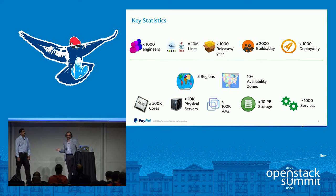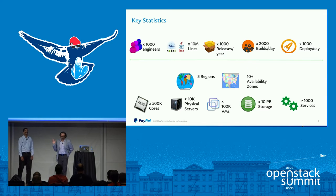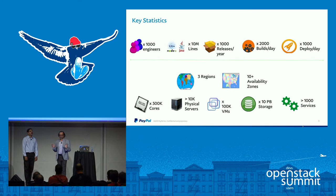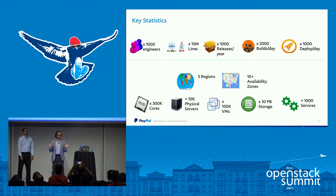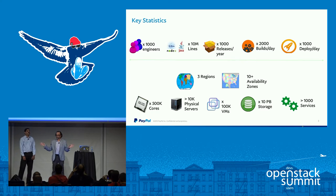Going to the infrastructure: we have thousands of engineers, over tens of millions of lines of Java, Node, and C/C++ code. We do over 1,000 releases every year, thousands of deploys literally every day. Our cloud is deployed in three different regions, all in the western United States — Salt Lake City, Phoenix, and Las Vegas. We have 10-plus availability zones distributed across those three regions.